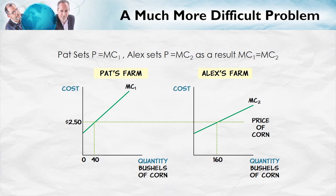Consider how Pat profit maximizes: by choosing to produce that quantity such that price is equal to Pat's marginal cost. Alex profit maximizes by producing that quantity such that price is equal to Alex's marginal cost. And since the price of corn is the same for both of them, they automatically choose to allocate production across their two farms such that the marginal cost on Pat's farm equals the marginal cost on Alex's farm — and production is automatically allocated so as to minimize total costs. Neither Pat nor Alex intend nor perhaps even understand this result. It's only through the operation of the invisible hand that production is automatically allocated across these two farms to minimize total cost.